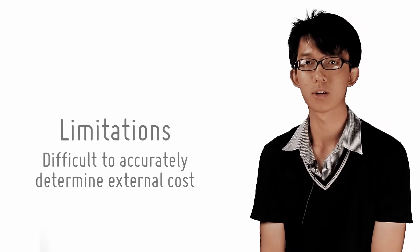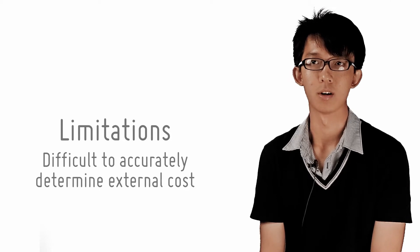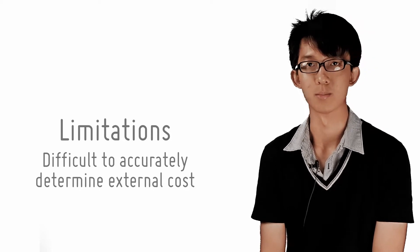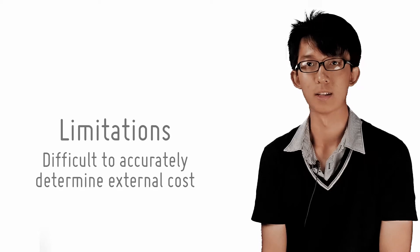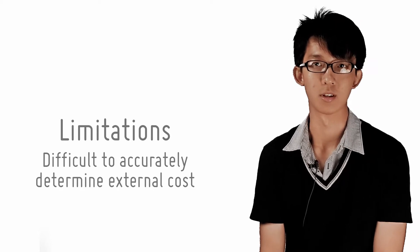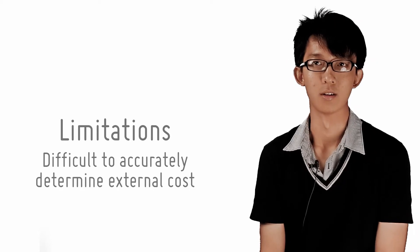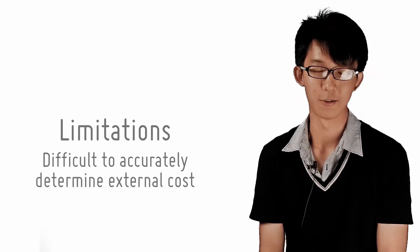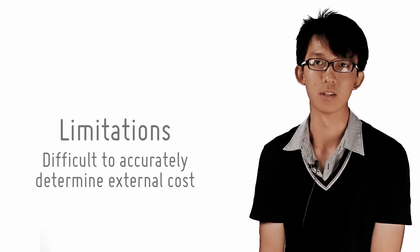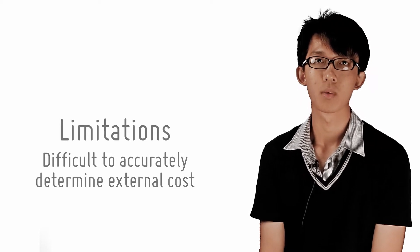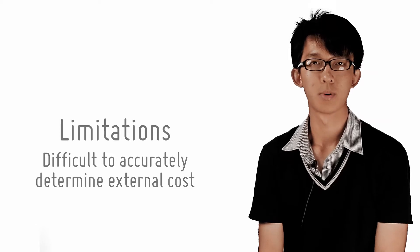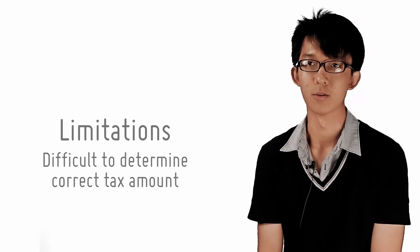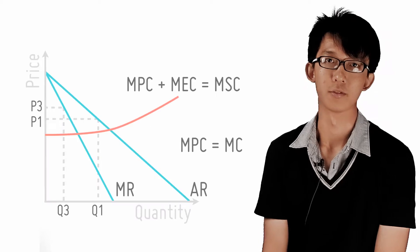However, it is difficult to accurately determine the correct amount of tax. Over-taxation will result in under-consumption, while under-taxation will not completely reduce the source of market failure, although there is still less allocative inefficiency than at first. Also, the problem of estimating the correct amount of tax becomes more difficult when an imperfect market structure is involved.